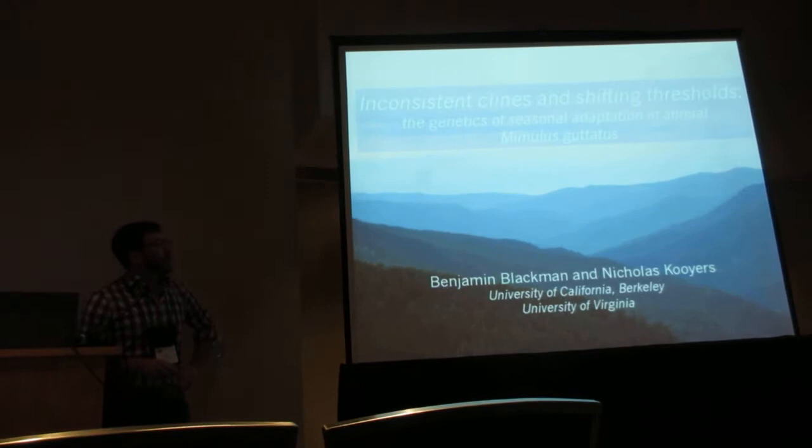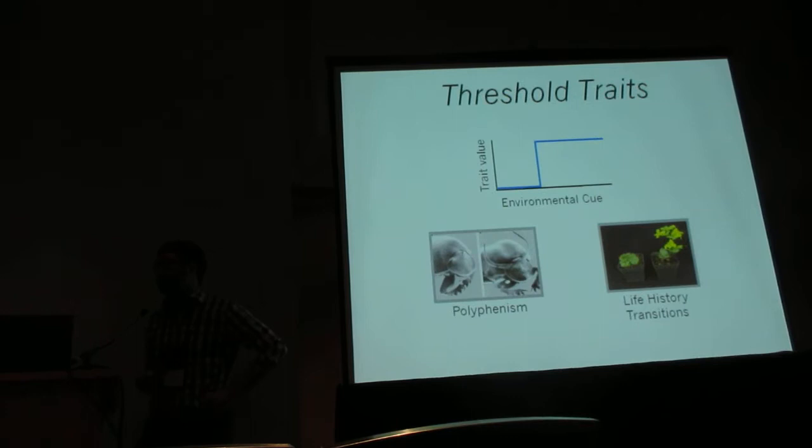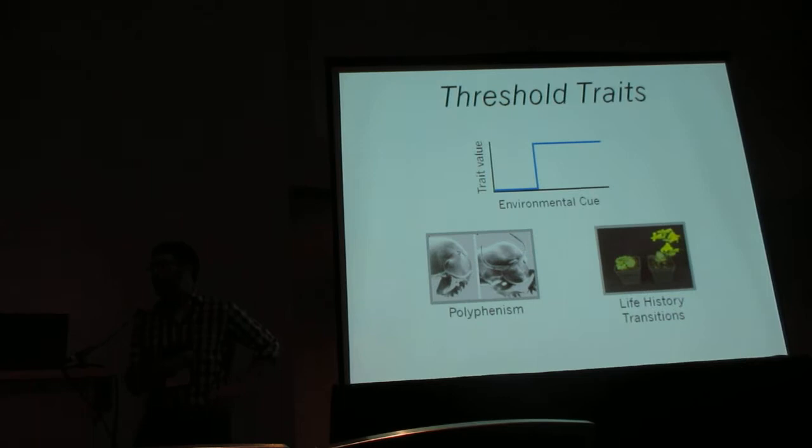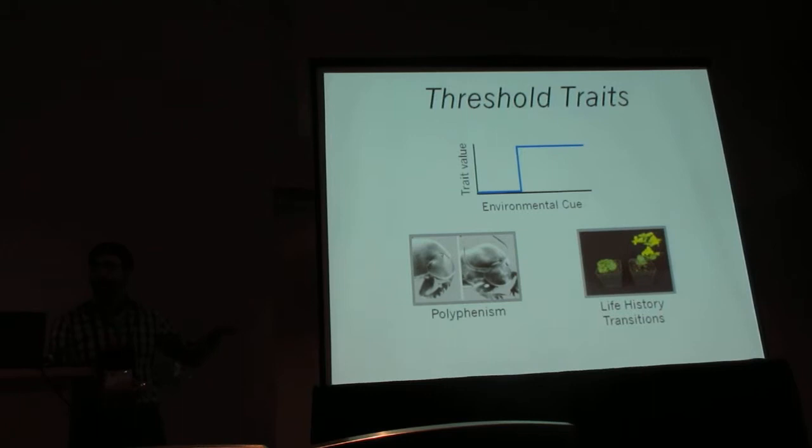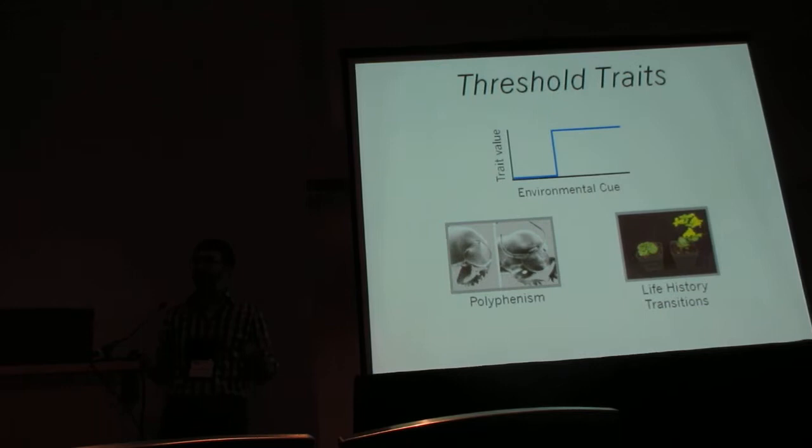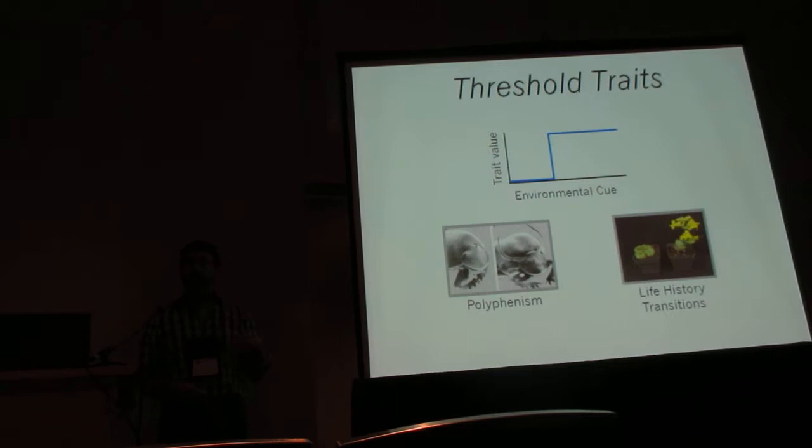I'm Ben Blackman from the University of California at Berkeley, and today I'm going to talk about a particular type of plastic response, which is a threshold response. Many phenotypes are only expressed when the environment exceeds some critical minimum threshold or falls below some critical maximum. We often think about these types of threshold traits in the context of polyphenism, where there are two alternative phenotypes, either of which is expressed depending on the environment experienced during an earlier stage of development.